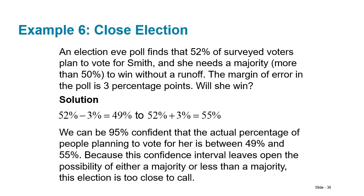A poll finds that 52% of surveyed voters plan to vote for Smith, who needs more than 50% to win. The margin of error is three percentage points. So 52 minus 3 is 49 and 52 plus 3 is 55 — we can be 95% confident the actual percentage is between 49% and 55%. Because that interval includes values below 50%, you cannot say with 95% confidence that she will win.